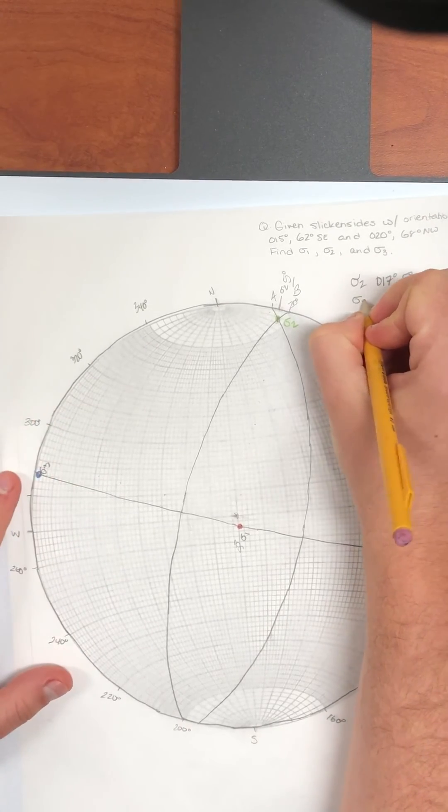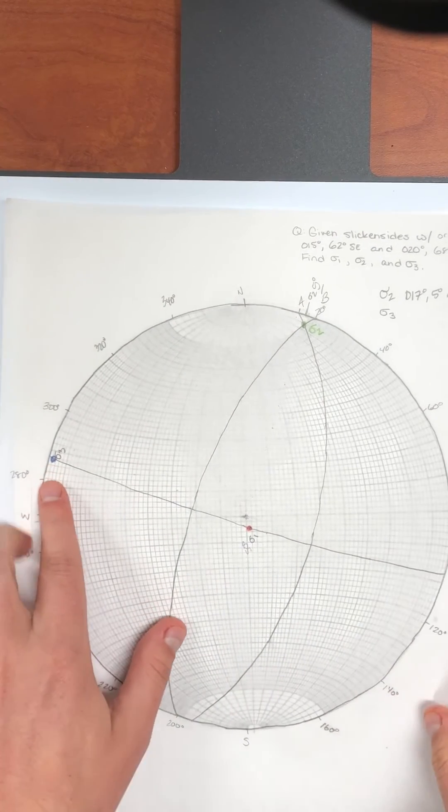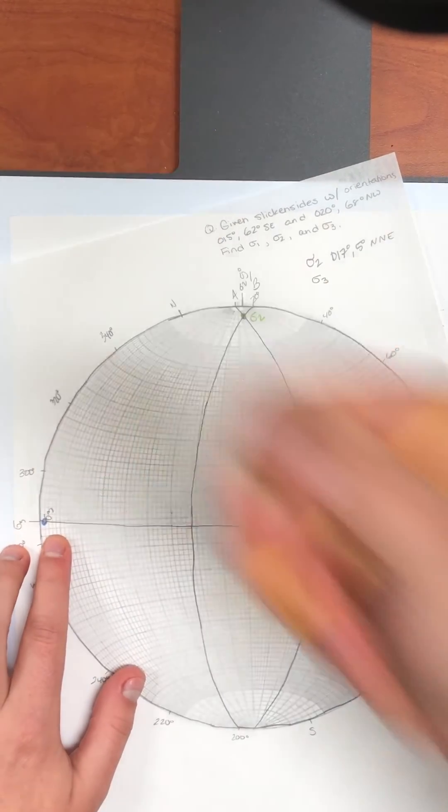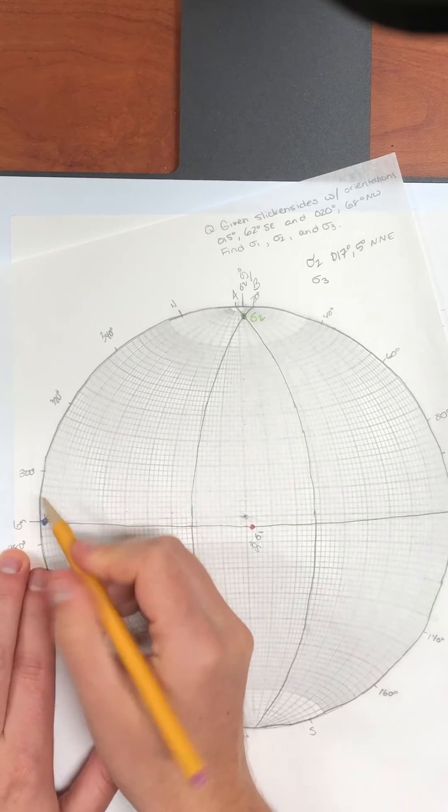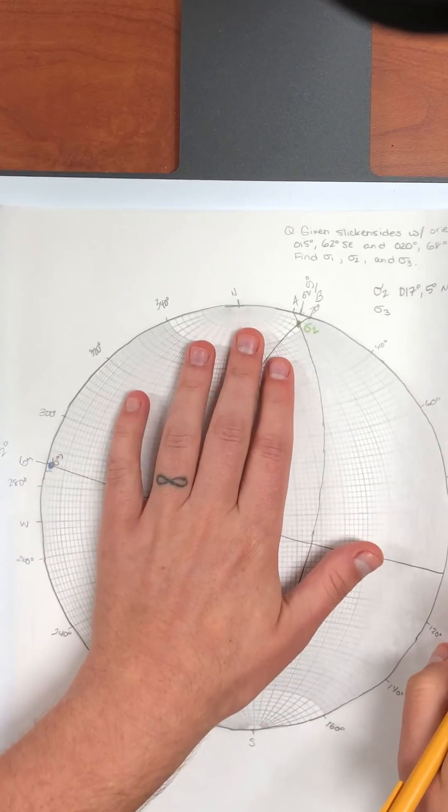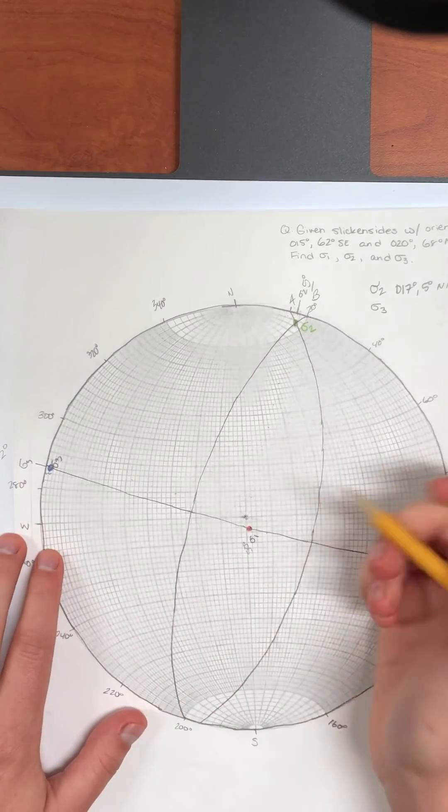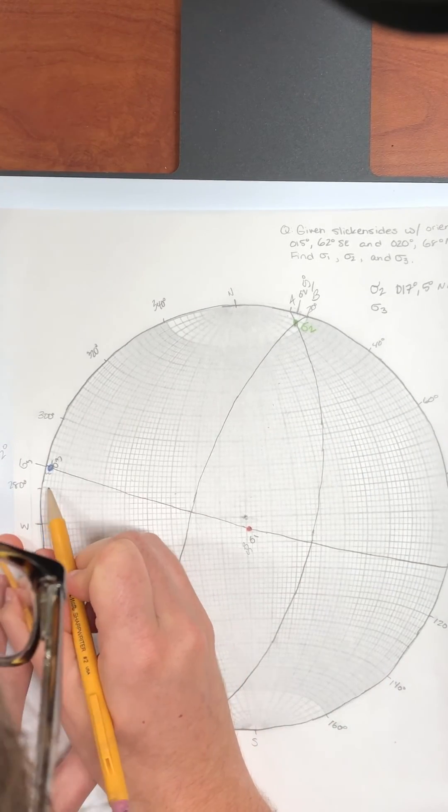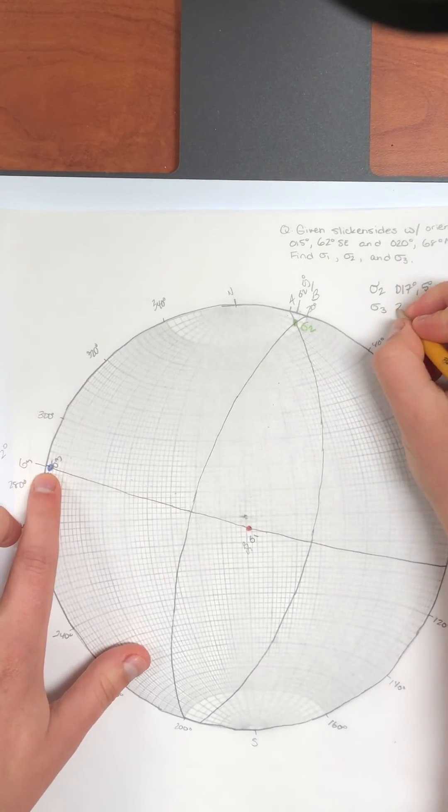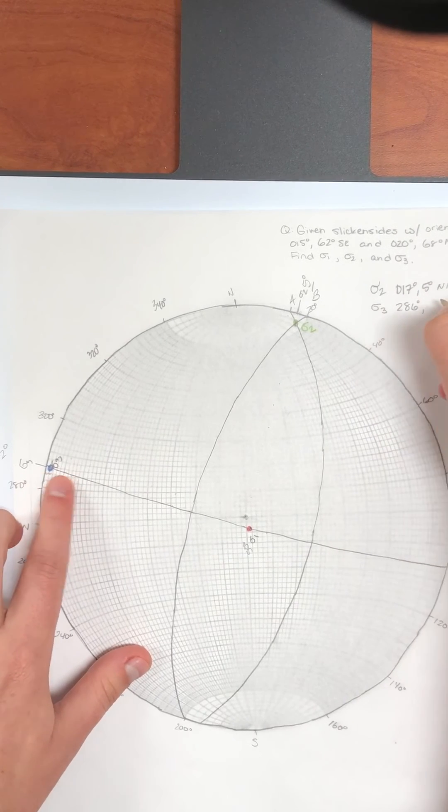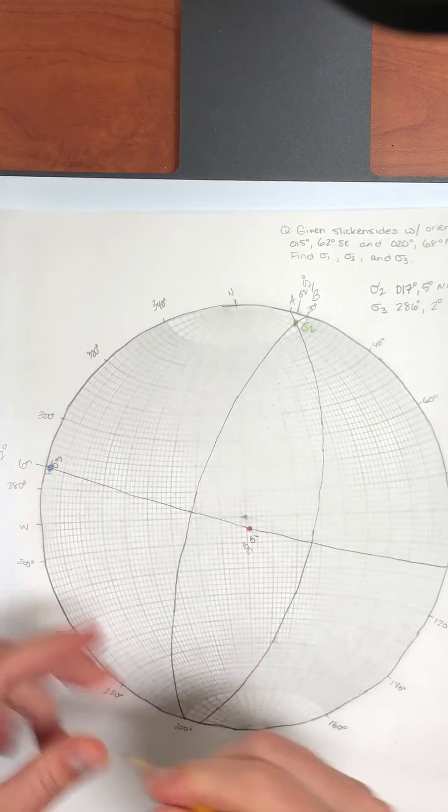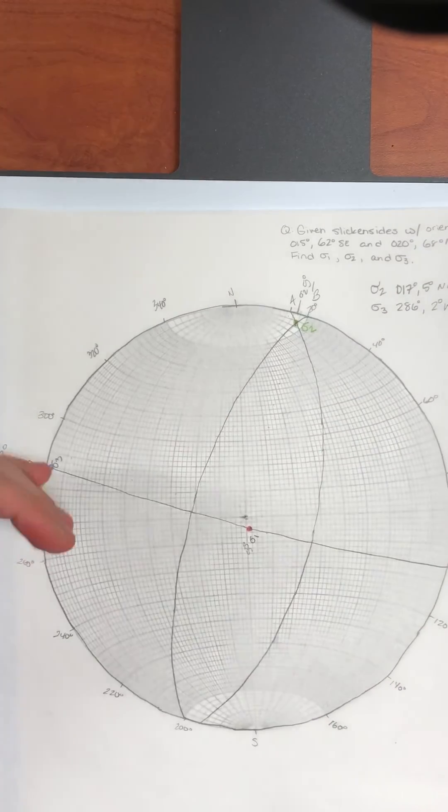Okay, let's do sigma three next. I take sigma three, rotate it to the horizontal, put a tick mark, remind myself that that's sigma three. Sigma three is about two in from the edge, so our plunge is two degrees. And if I rotate back to north, I can count over. That's 280, 282, 284, 286, and two degrees. And if I take my pencil and try to plunge it over there, it's pretty much to the west, a little bit to the northwest.